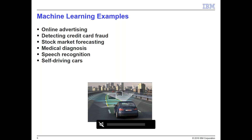Machine learning is ubiquitous today. You can't go to a website without seeing pop-up advertisements driven by machine learning algorithms determining what ads to show you. It's used for credit card fraud detection, stock market forecasting, medical diagnosis — determining whether a tumor is malignant or benign or whether a mole indicates skin cancer. Speech recognition in mobile devices like Siri is driven by machine learning, and probably the most-discussed application today is autonomous driving in cars.